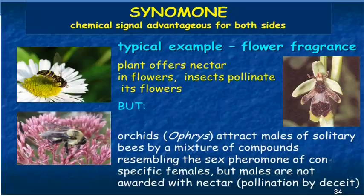Synomones are chemical substances that are advantageous to both the emitter and the receiver. The typical example is flower fragrance — all social insects, bees, and pollinators are attracted towards flower fragrance. This is a synomone because the emitter — the flower — benefits through pollination, and the receiver — the honey bee — gains pollen and nectar for honey formation.